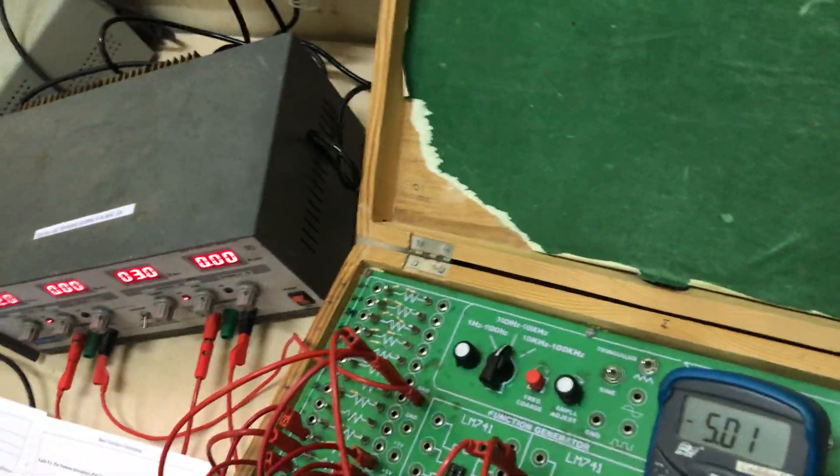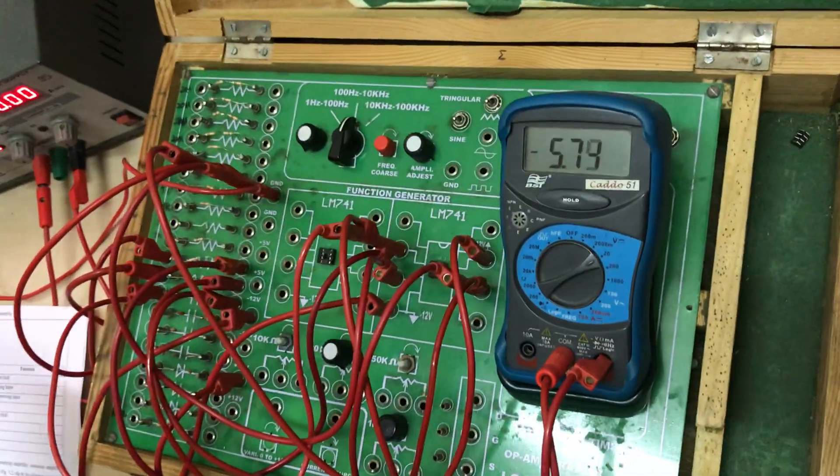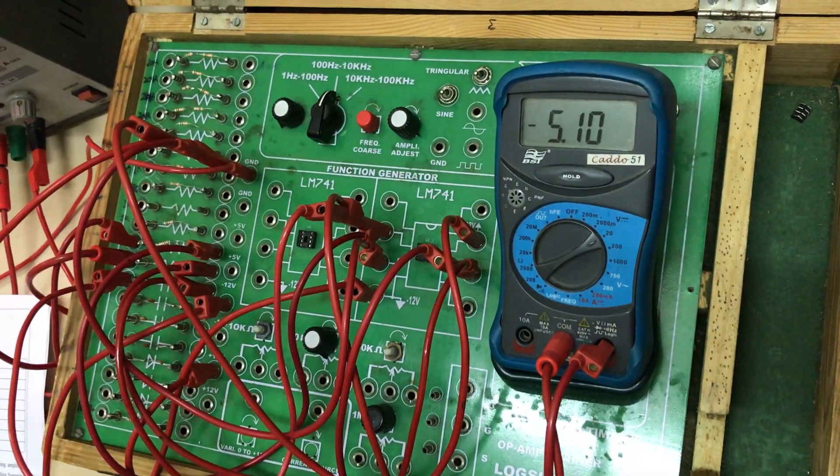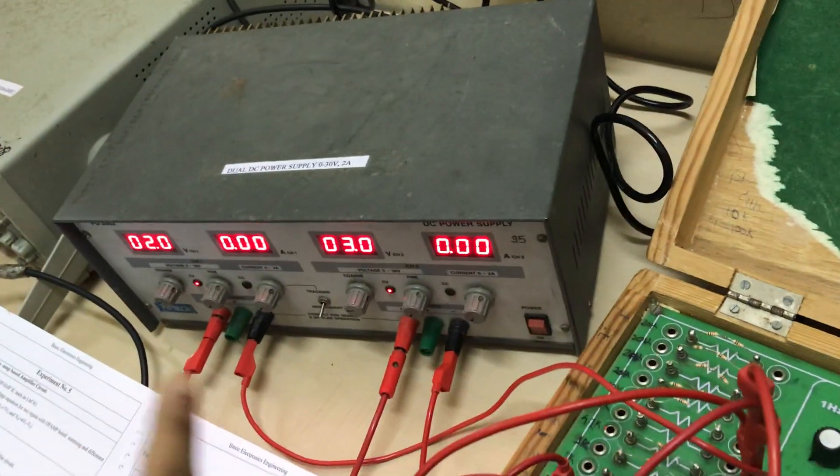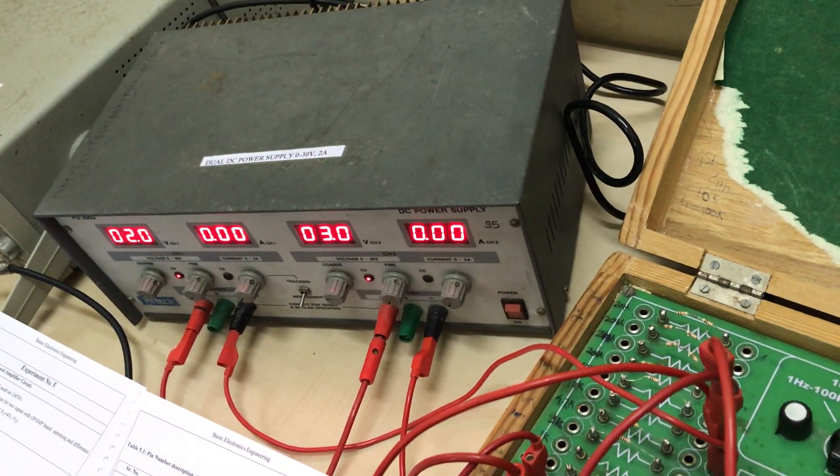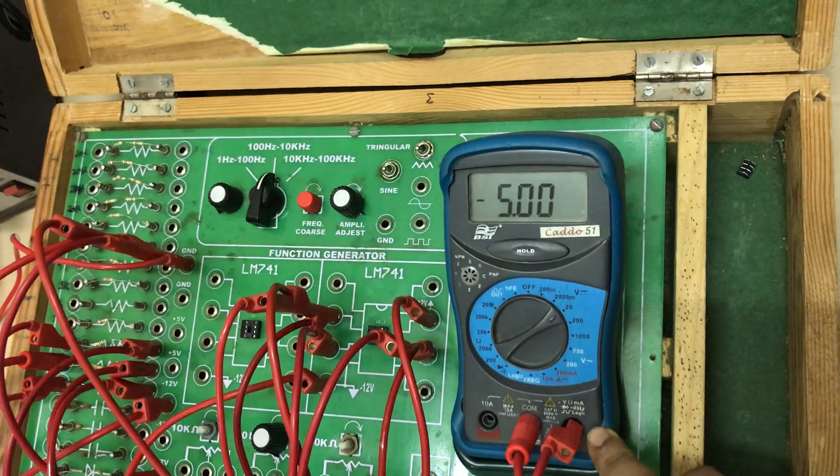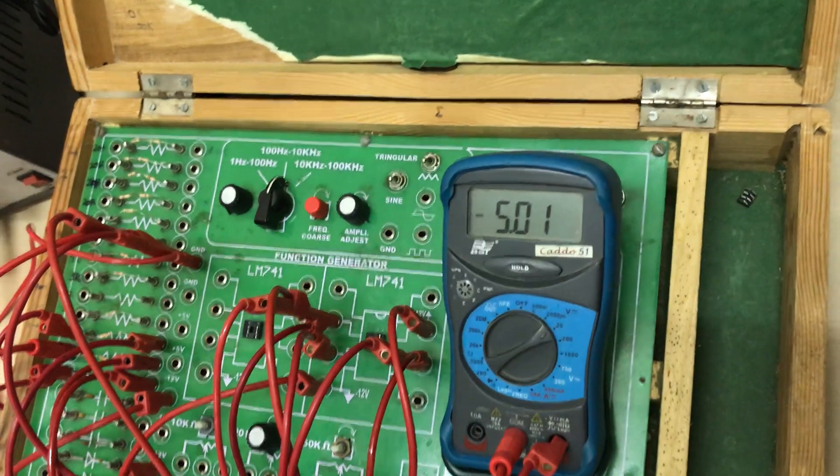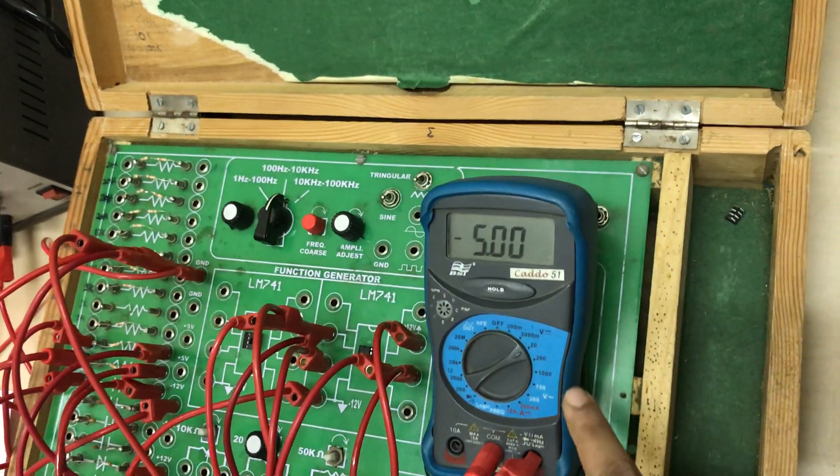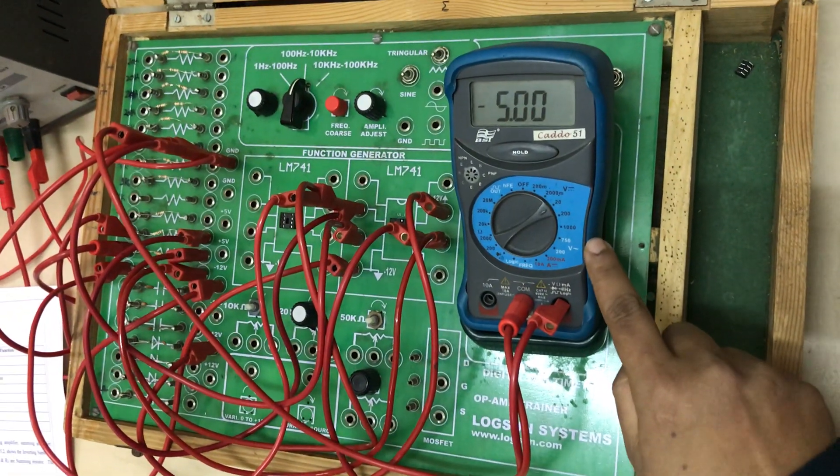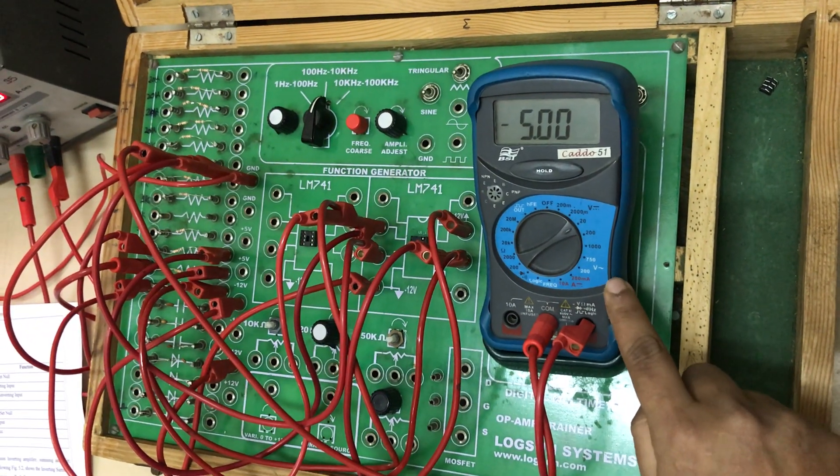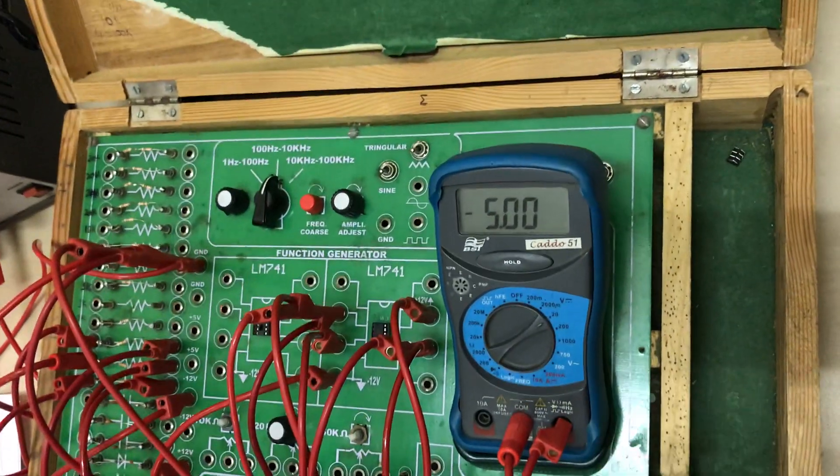Here the connection already done. In this connection we are connected 2 inputs: pin number 2, 2 volts and 3 volts, 2 inputs, and output voltage here we are getting minus 5. Theoretically also it is minus 5 and practically also we are getting minus 5. So summing amplifier is verified.